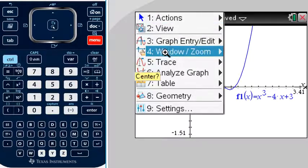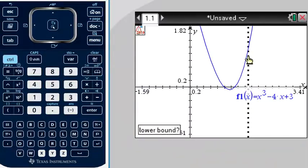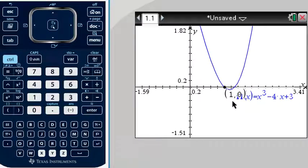So we'll go menu, analyze graph, zero, lower bound, upper bound. There's one of them, so it's at x equals 1.